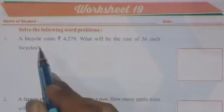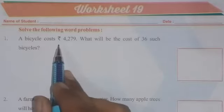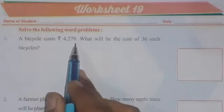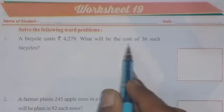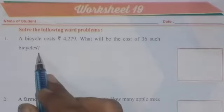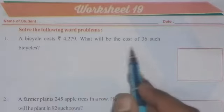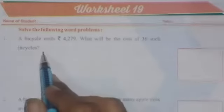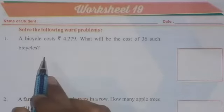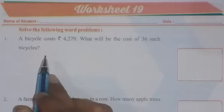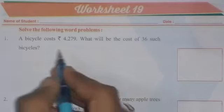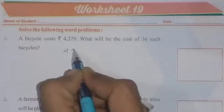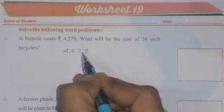The first question is given. A bicycle costs rupees 4279. What will be the cost of 36 such bicycles? We have to find the cost of 36 bicycles. So whenever we have to find value of any object that is more than one, then we perform multiplication. So we have to multiply 4279 by 36.